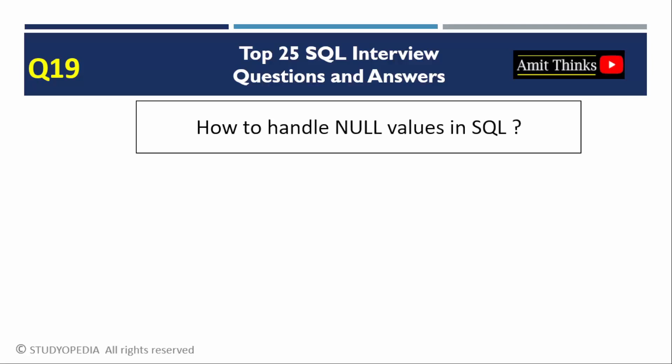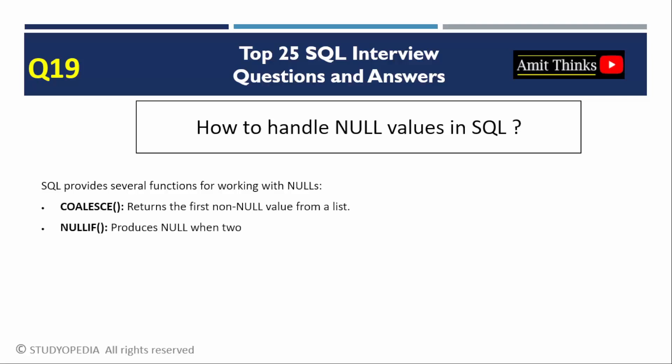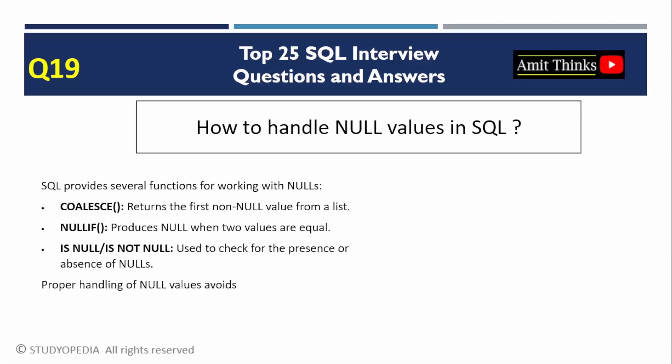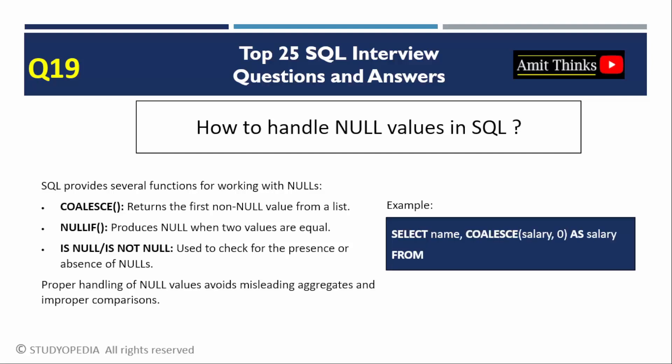Question 19: How to handle NULL values? Use functions to manage NULLs, including: COALESCE (returns the first non-null value), NULLIF (returns NULL if two values are equal), and IS NULL / IS NOT NULL (check for NULLs). NULLs represent missing data and require careful handling in aggregates and comparisons. In this example, we retrieve employee names and salaries from the employees table using the COALESCE function — if salary is NULL it is replaced with zero; otherwise the actual value is kept.